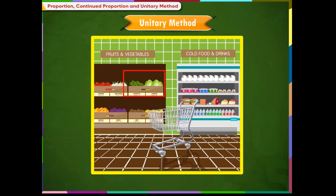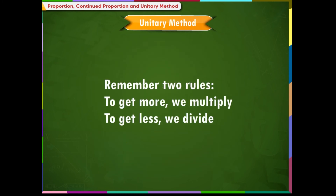Sometimes we calculate the price of one article if the price of multiple articles is given. The method to calculate the price of the required articles is called the unitary method. Generally, first we find the value of one article from the value of multiple, then we find the value of the desired number from the value of one. Remember two rules: to get more, we multiply; to get less, we divide.